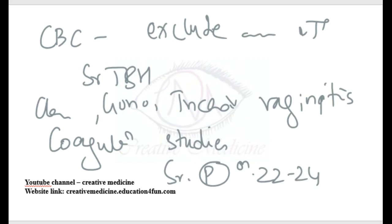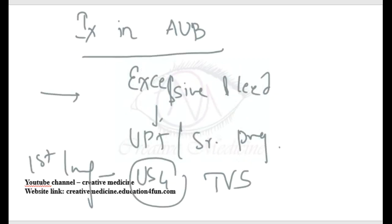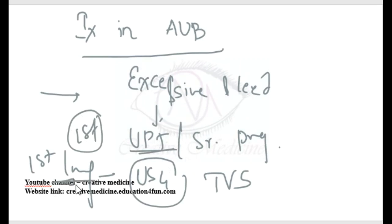To summarize, the first step is the serum pregnancy test or urinary pregnancy test, and the first imaging is ultrasonography. These are the key investigations to be done in cases of abnormal uterine bleeding.